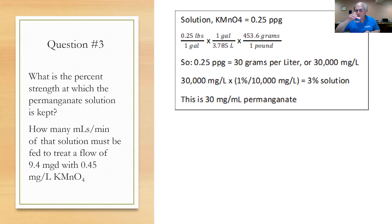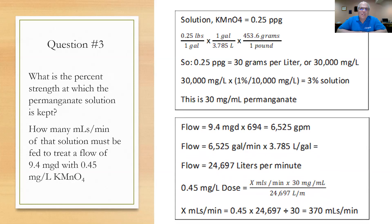For the second part, how many milliliters per minute of the 30 mg/mL (3%) solution is needed to treat 9.4 MGD at 0.45 mg/L? Convert 9.4 MGD to 6,525 GPM by multiplying by 694, then to 24,697 liters per minute by multiplying by 3.785. Setting up the equation: 0.45 mg/L equals X mL/min times 30 mg/mL divided by 24,697 L/min. Solving for X gives approximately 370 milliliters per minute of permanganate solution.